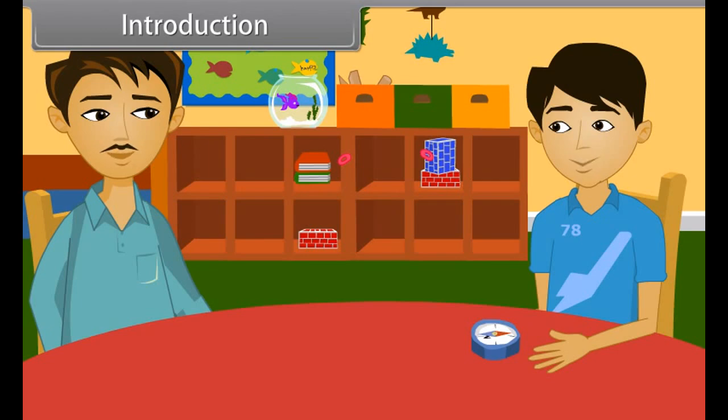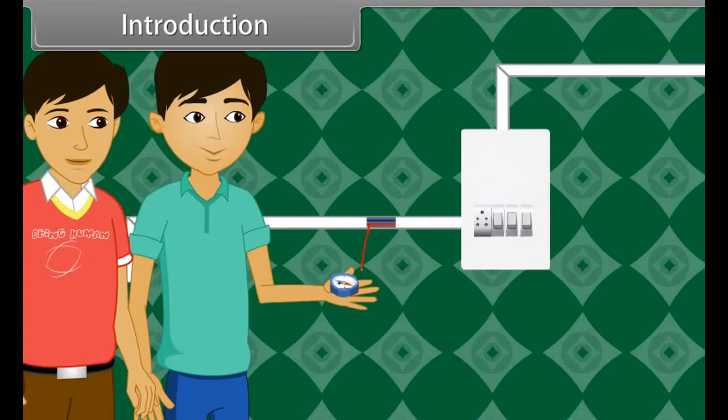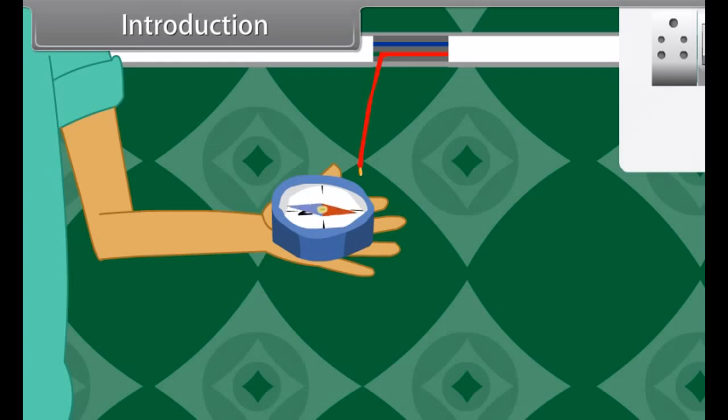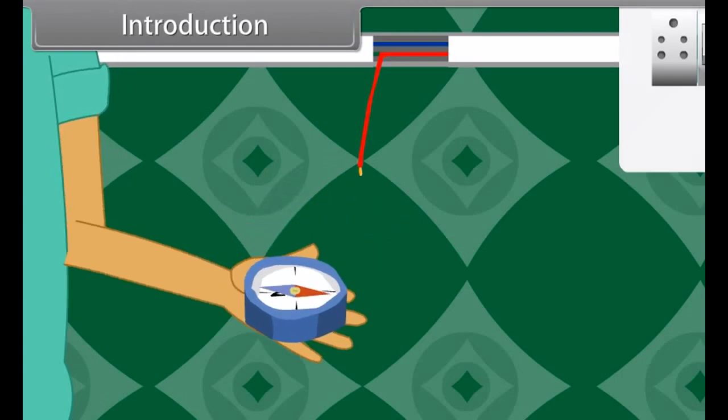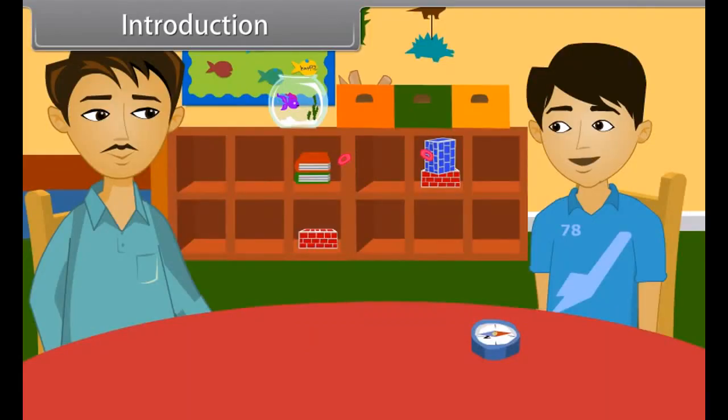Yes, Rajiv. Tell me exactly what happened. I took the compass to my friend's place. They have some electric work being done in their house. We were playing with the compass very close to an open wire. Suddenly, for no reason, the compass needle got deflected. When we moved away from the wire, it came back to where it was. Why did that happen?